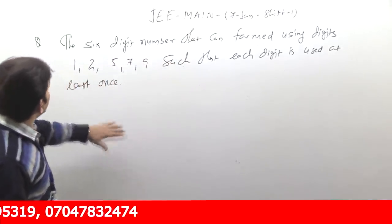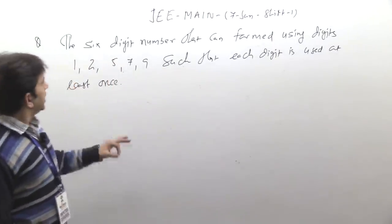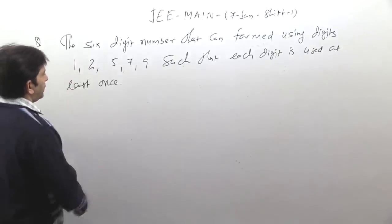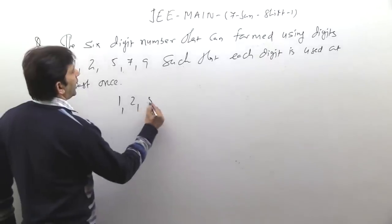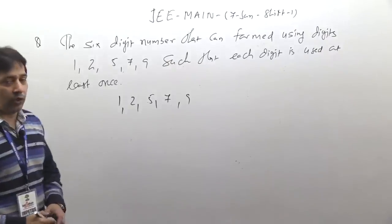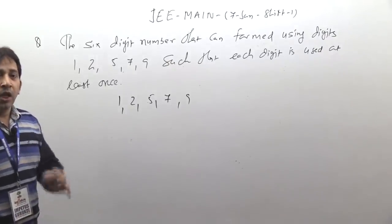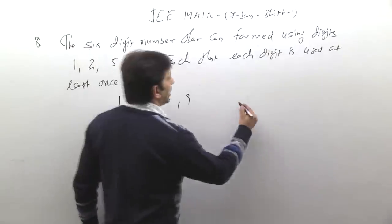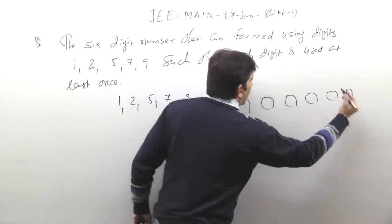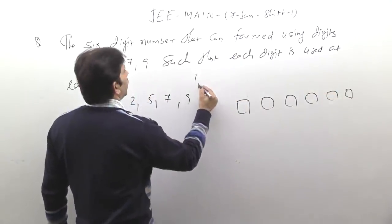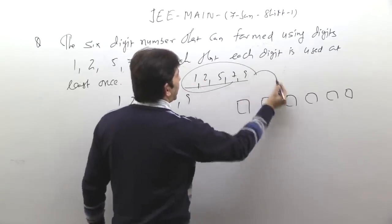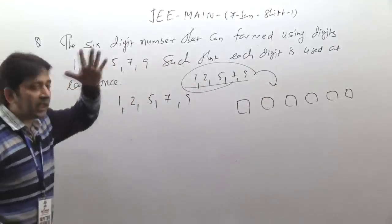Now look at the question. What is this? Six-digit number — the six-digit number that can be formed using the digits 1, 2, 5, 7, 9 such that each digit is used at least once. What a good question! The question is that a six-digit number is made using permutation and combination with digits 1, 2, 5, 7, and 9. Five digits are given and a six-digit number is to be made with the condition that each digit is used at least once.